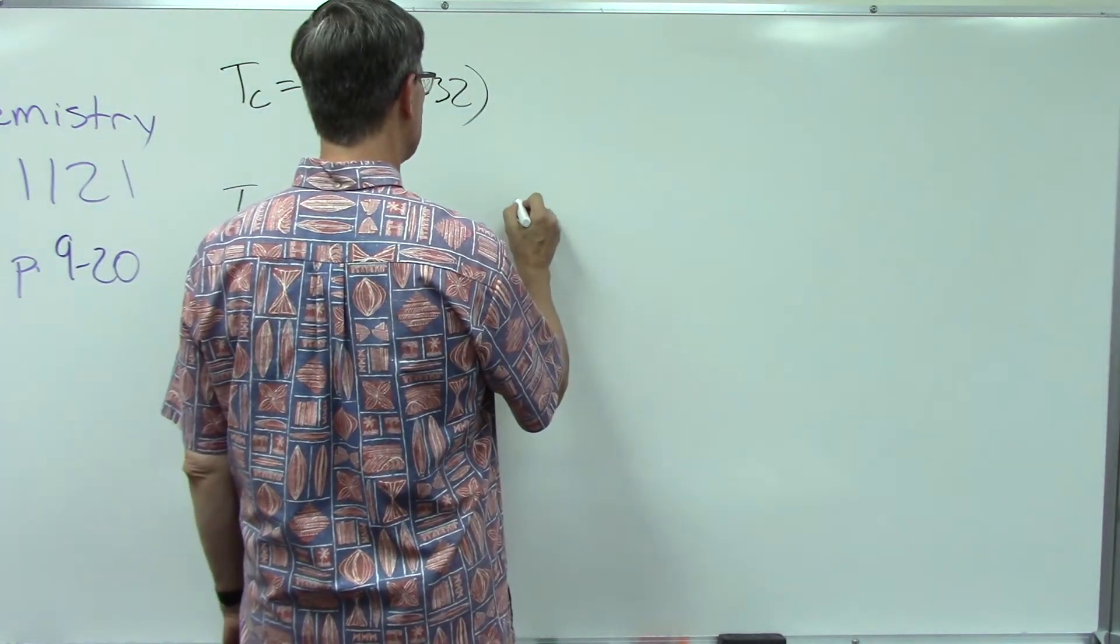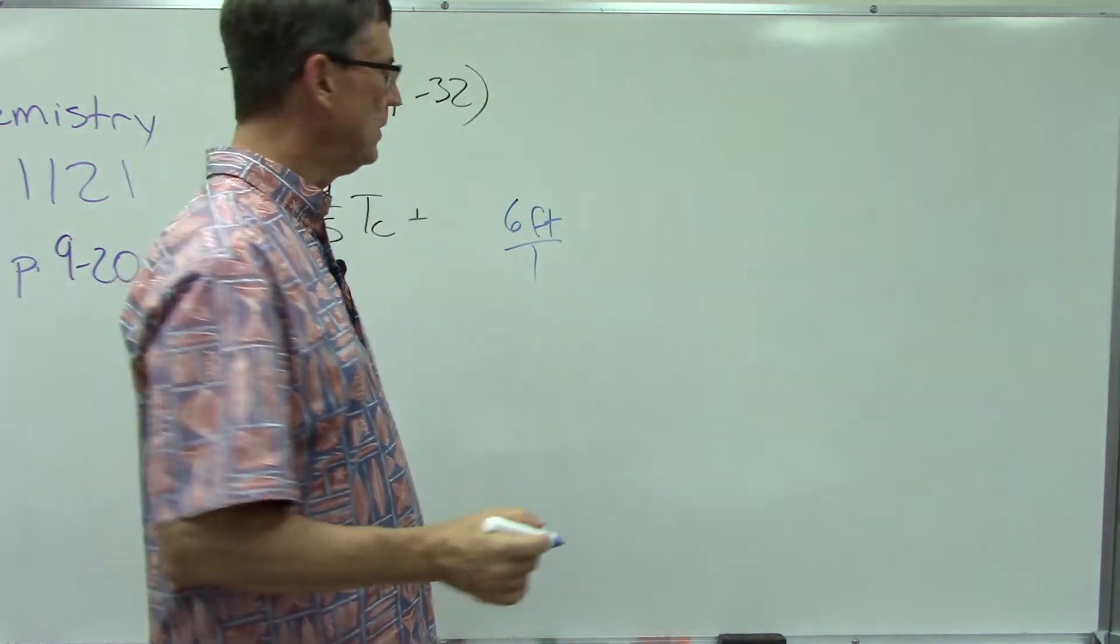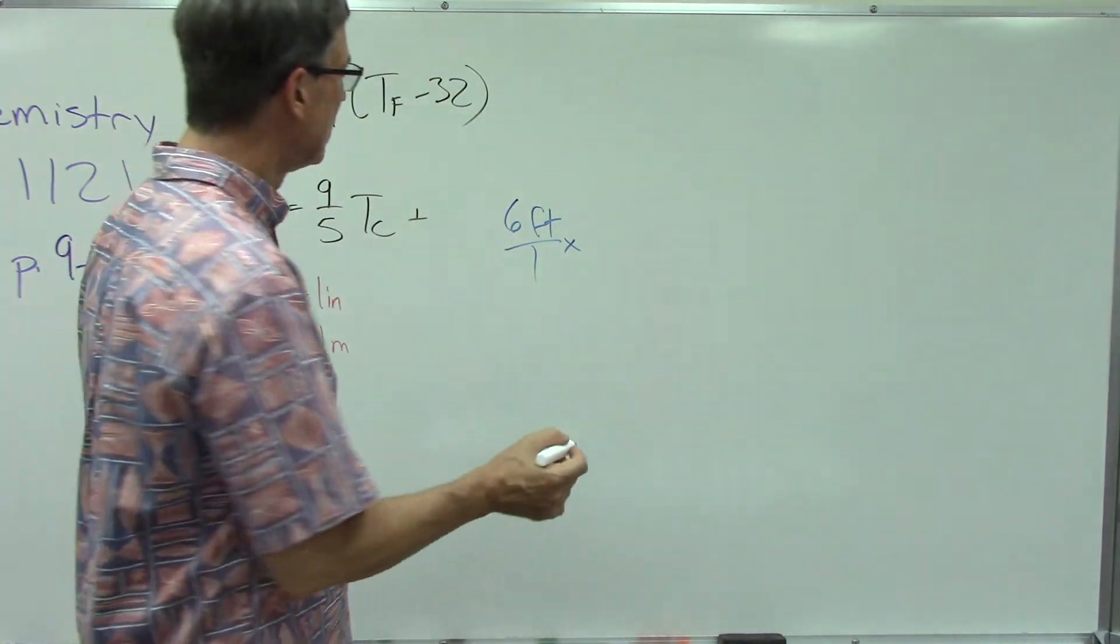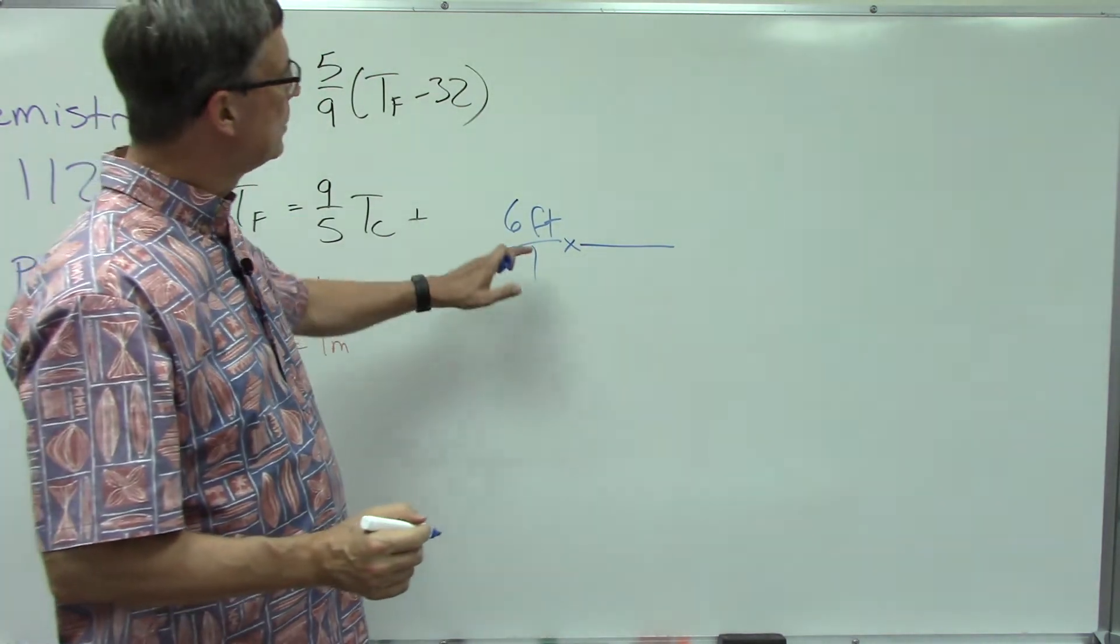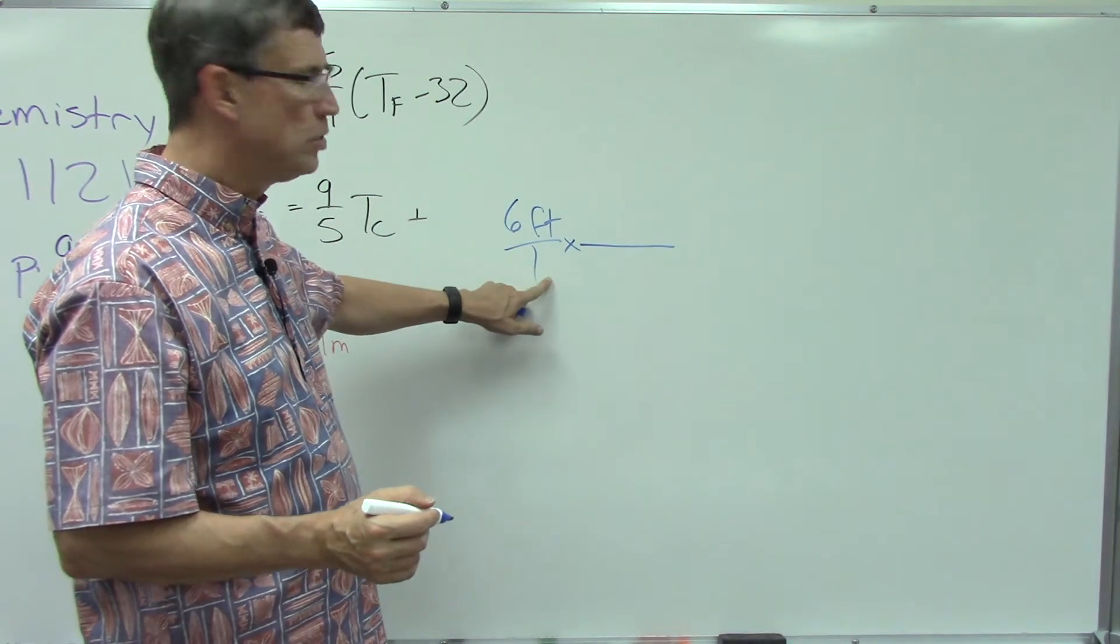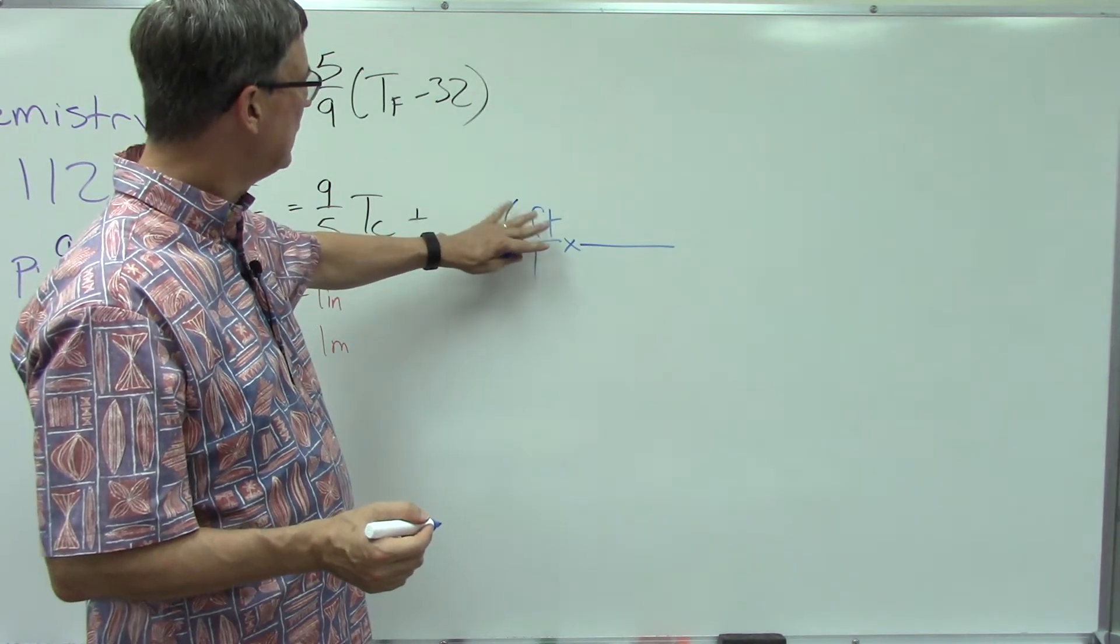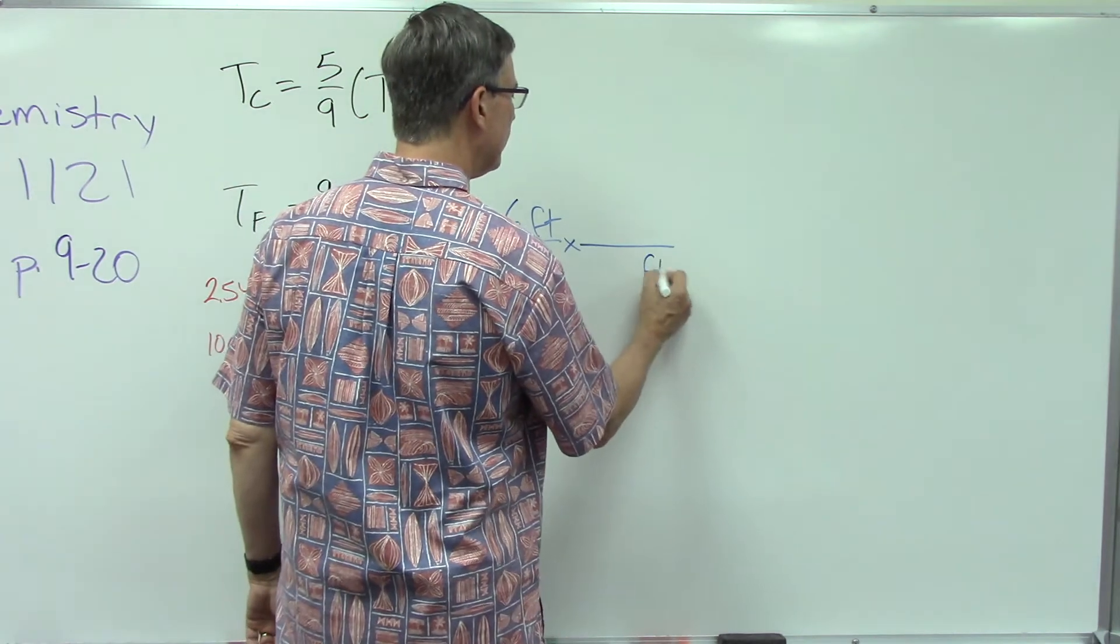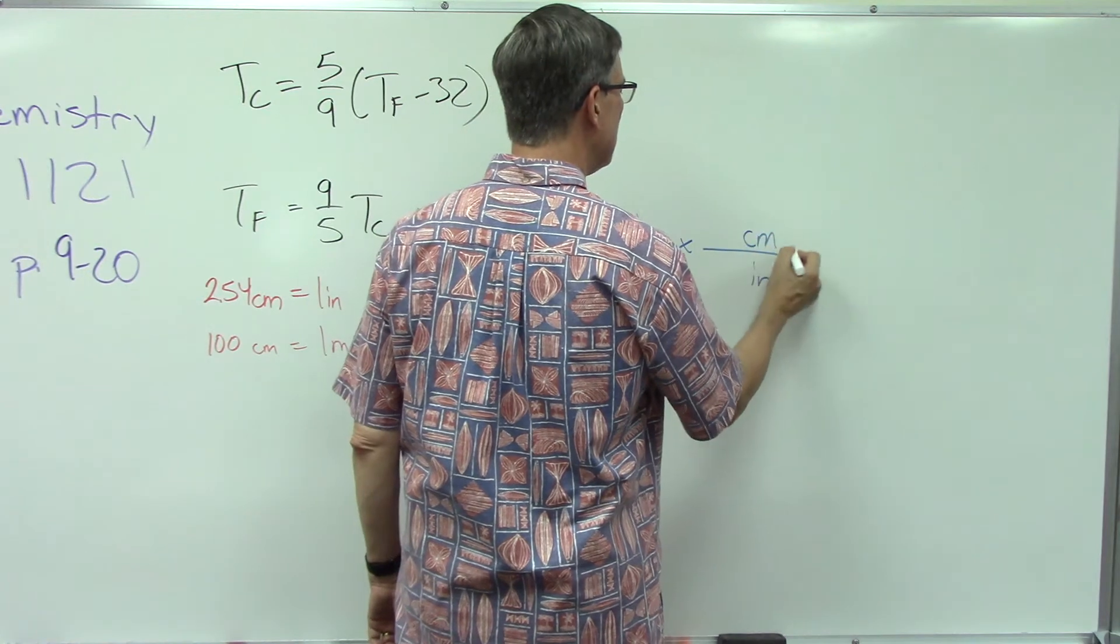There are some facts that we need to have memorized. We need to know that 2.54 centimeters is the same as an inch. Obviously we should know that one foot is 12 inches, and then we need to be able to convert from centimeters to meters. Let's say we had something that was 6 feet tall, so that's about my height, 6 feet, and I want to go out to meters. We're going to first multiply. Now notice what I did here, I put it over 1.